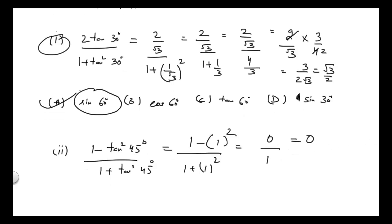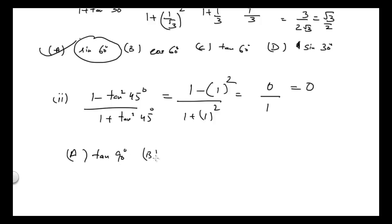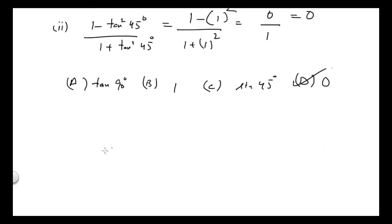So 1 minus 1 is 0 in the numerator, and the denominator is 2, giving an answer of 0. The choices here are tan 90°, 1, sin 45°, and 0. So the answer is obviously D.